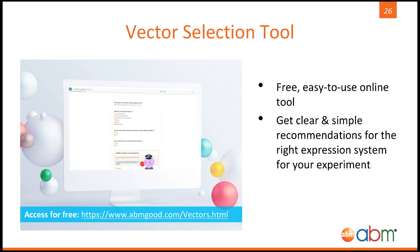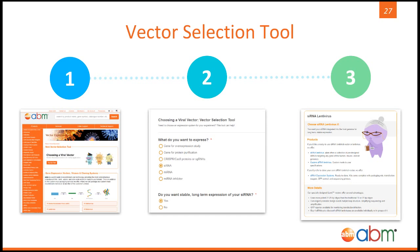Let's go through an example of how to use this viral vector selector tool. Let's say I want to express siRNA in a cell line stably, for long-term expression. I would simply choose from the list this tool provides, each choice having a follow-up question, until your model has been narrowed enough for one viral vector. On the right, you can see what viral vector type we recommend, with a small definition of the virus and what it is typically used for, as well as products we offer.